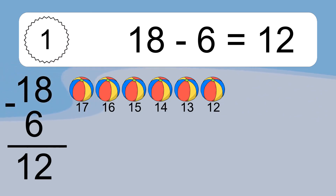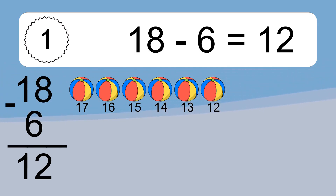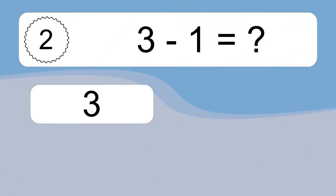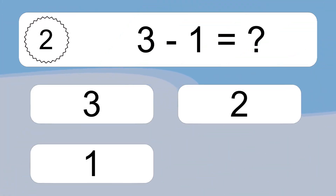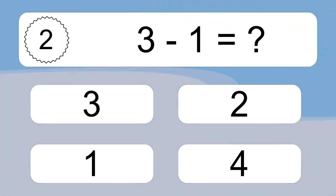Let's count it: 17, 16, 15, 14, 13, 12. 3 minus 1 equals what?